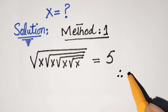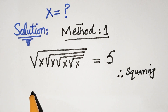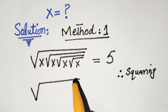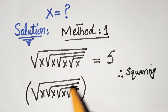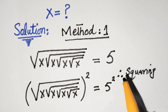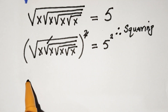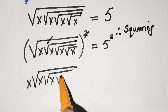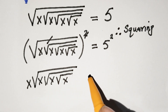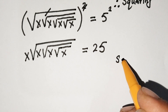Squaring both sides, we get square root of x times square root of x times x, all squared, equal to 5 squared. We can cancel the square with the root, giving us x times square root of x times square root of x times square root of x, which is equal to 25. Now we square again.